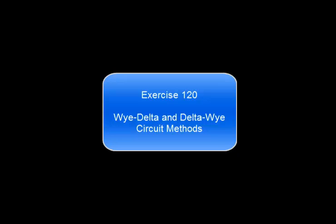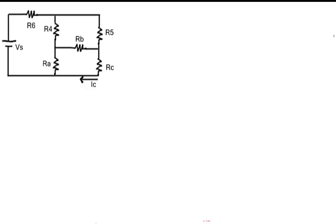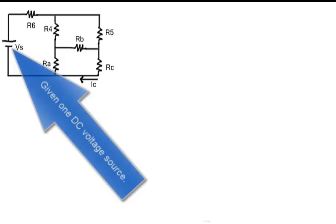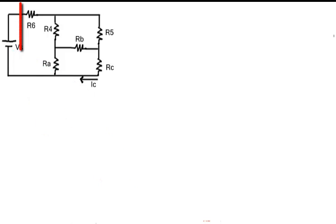Exercise 120: Y Delta and Delta Y circuit methods. The circuit has one DC voltage source and six resistors. Calculate the current through resistor C.